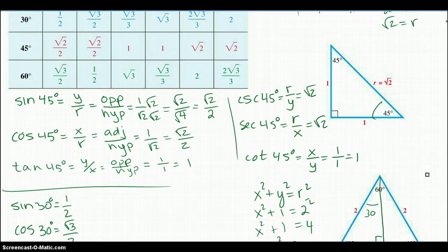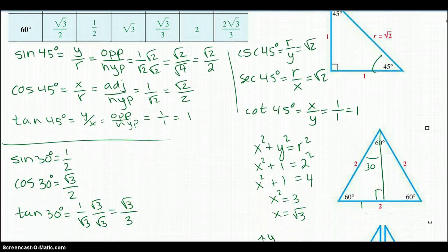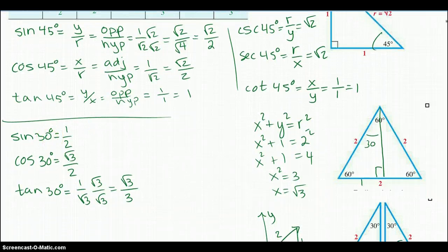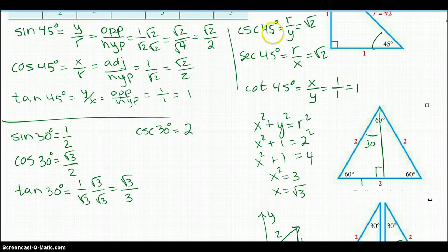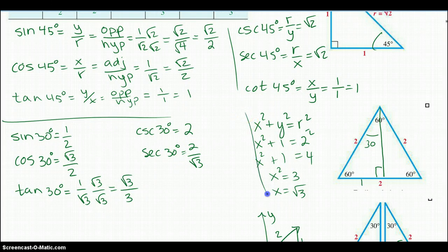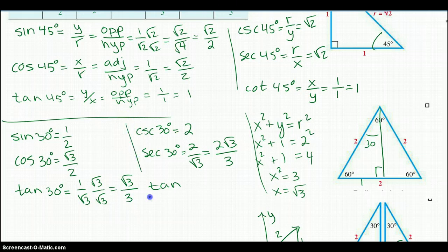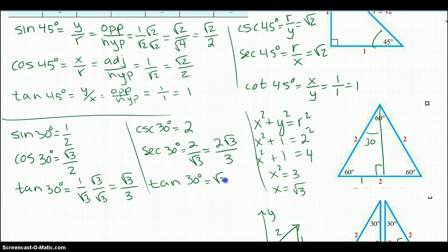So those are the three values of 30: you get 1/2, square root of 3 over 2, and square root of 3 over 3. The cosecant of 30 degrees is equal to 2, because it's r over y. The secant of 30 degrees is going to be 2 over square root of 3, which when rationalized is 2 square root of 3 over 3. And the cotangent of 30 degrees is going to be square root of 3 over 3.